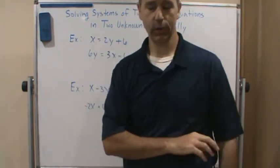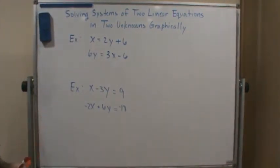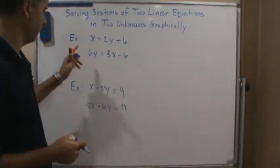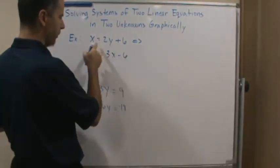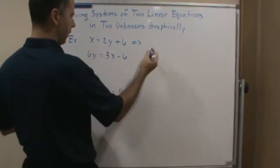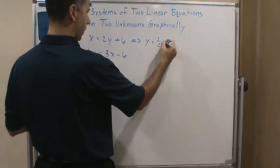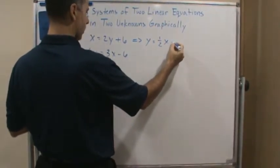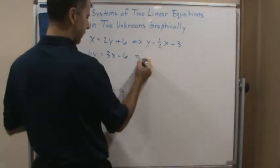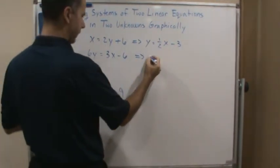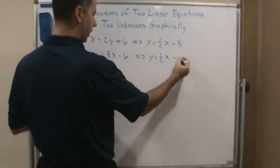Let me show you with an example. We've got two examples here and I'm going to do the first one. The first thing I want to do is solve these in slope-intercept form. I'm going to move the six over and then divide by two, so that gives me y equals one-half x minus three. And then this one, if I divide everything by three, I get y equals one-half x minus one.